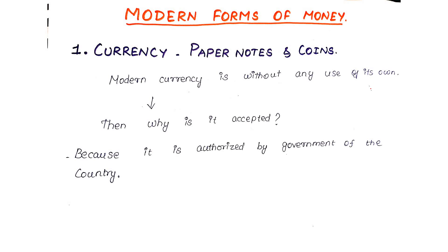Modern currency has no use value of its own — there is no intrinsic value in modern currency. So what is the point? The value comes from authority. That is why, in 2016, there was demonetization.